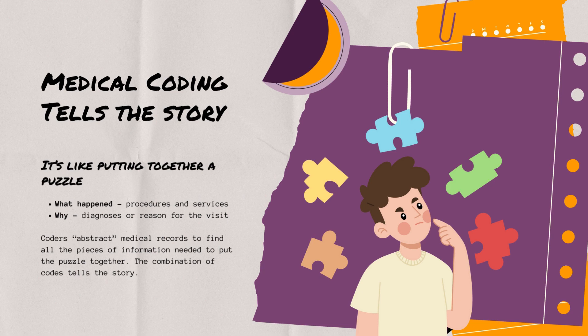Medical coding actually tells the story of the patient — it's like the coder is putting together a puzzle or painting a picture. You have to figure out what happened with that patient and why it happened. The 'what happened' is the procedure or services that were rendered, and the 'why' is the diagnosis or reason for the visit. Coders read through the medical record or chart and then abstract — parsing out bits and pieces of information and all the details necessary to find everything they need to put the puzzle together. The combination of codes is what tells the patient's story.